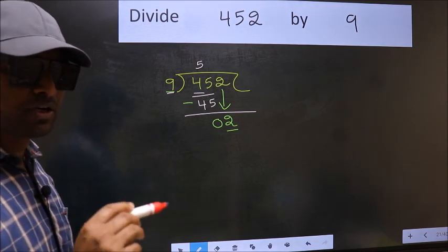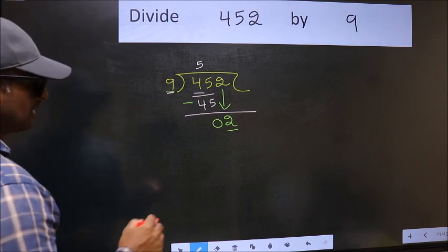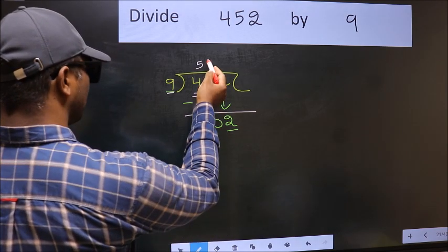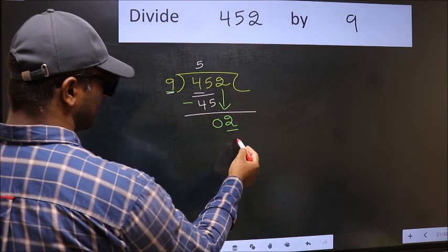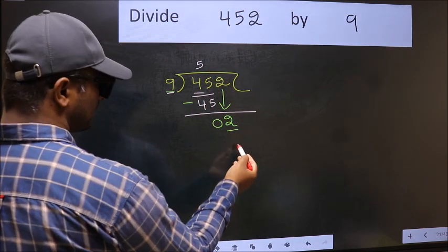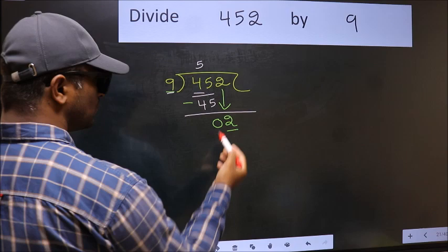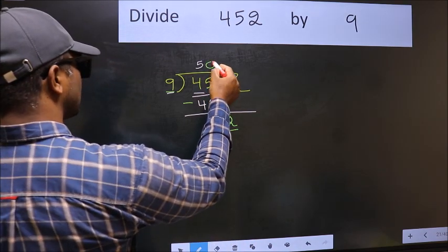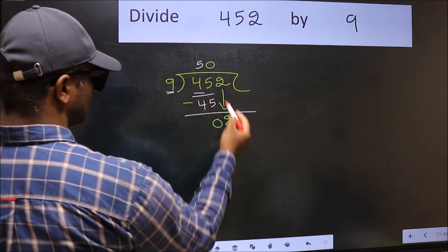Instead, what you should think of doing is, which number should we take here? If I take 1, we will get 9. But 9 is larger than 2. So what we should do is take 0. So 9 into 0, 0.